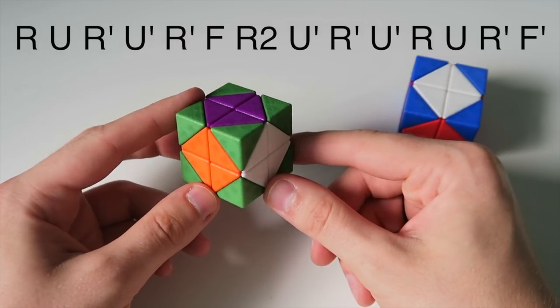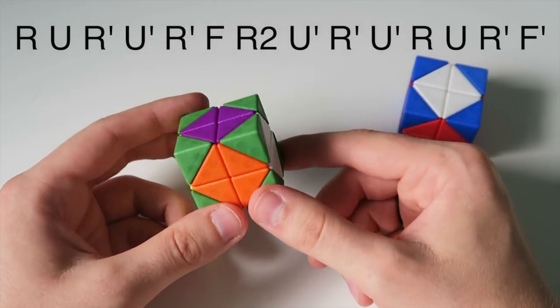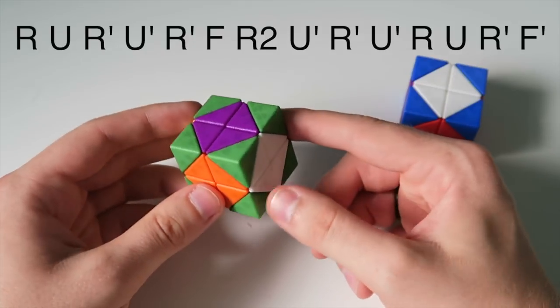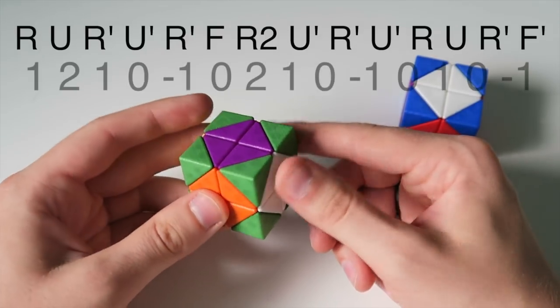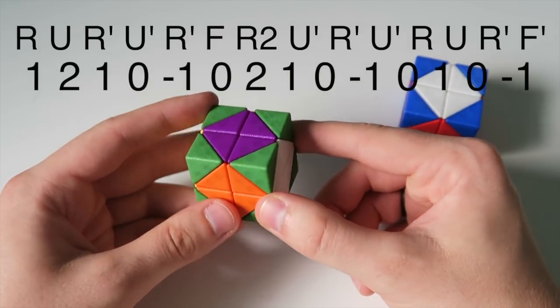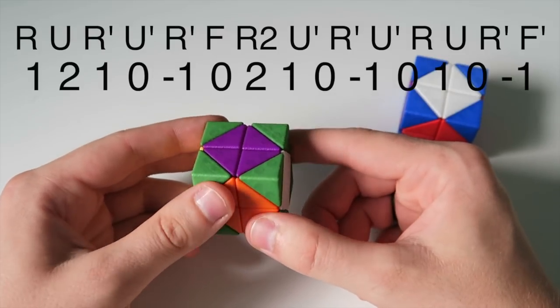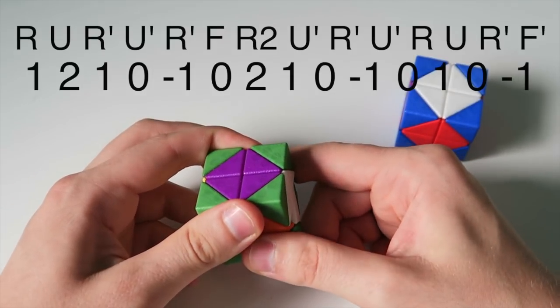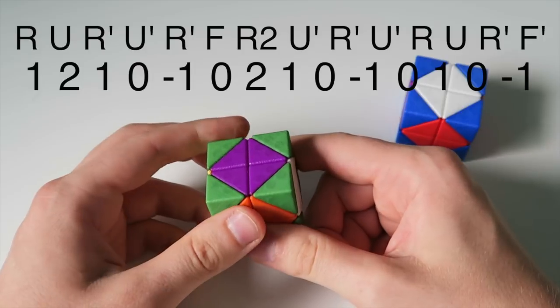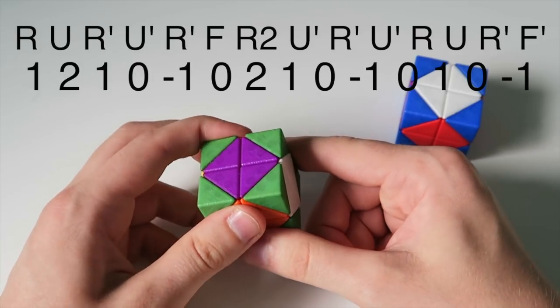The problem with the t perm is that when we count up the number of clockwise moves we do it becomes 1, 2, 1, 0, minus 1, 0, minus 1, 0, minus 1.